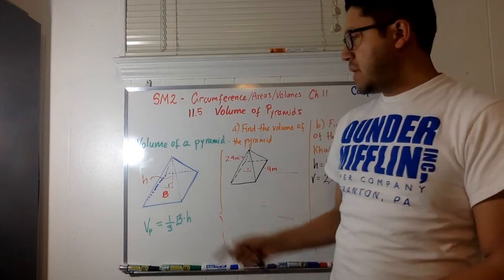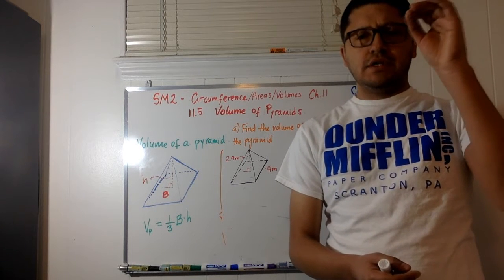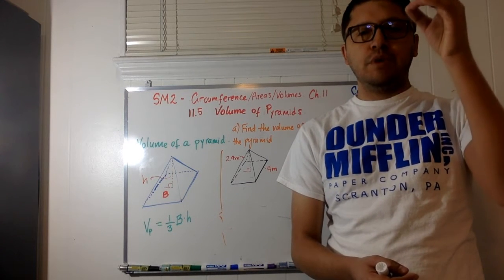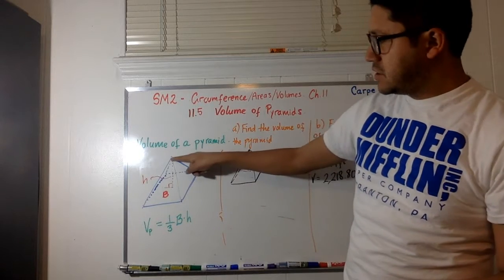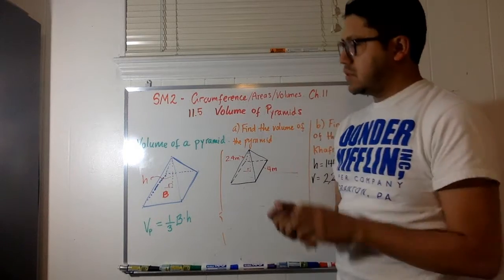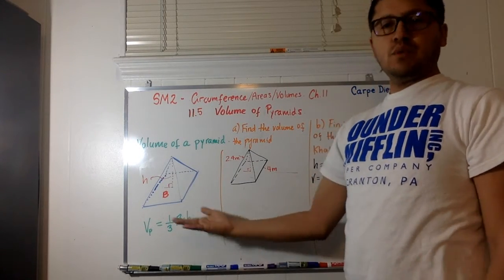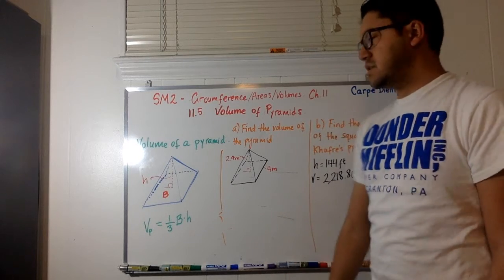And then you multiply that by the height, which is the distance from the top vertex of the pyramid to the ground, as you can notice here, making a perpendicular intersection right here. So, if we take this into account, then we will be able to solve some of these exercises.